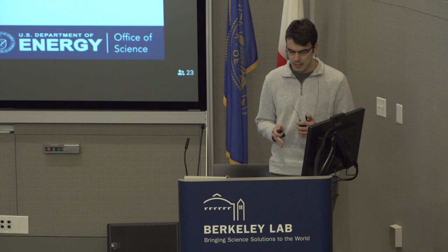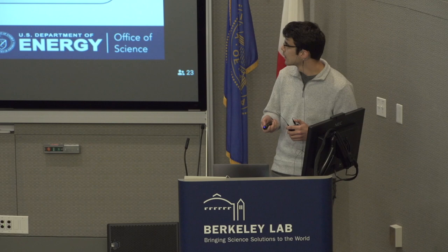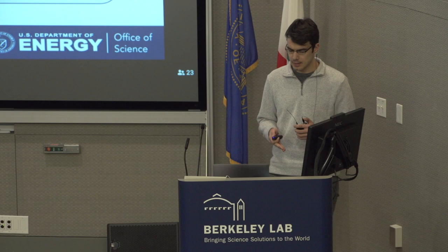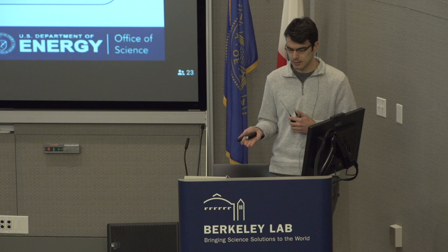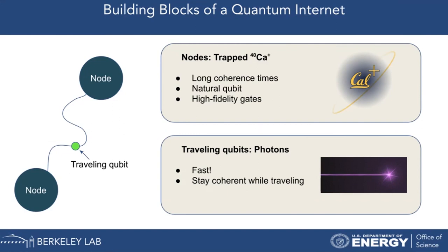That correlation persists over arbitrarily long distances. What I'm going to be talking about is a plan to build an experimental quantum internet between LBNL and the campus at UC Berkeley. To define what I mean by quantum internet: if you have two quantum nodes — quantum particles — one at one location and one at another, and you're able to send information between them using a traveling qubit, that constitutes the simplest quantum internet you can imagine.